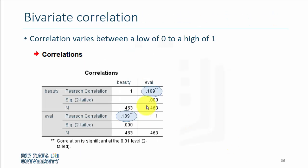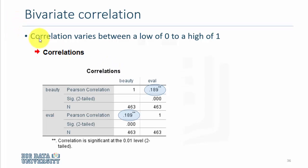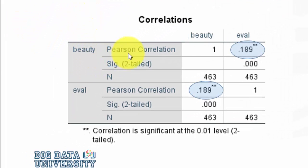So if you were to compute the bivariate correlation, the correlation coefficient which is called the Pearson correlation coefficient, it's 0.189 and that's the correlation between beauty and evaluation or beauty score and the evaluation, teaching evaluation. It's the same here.